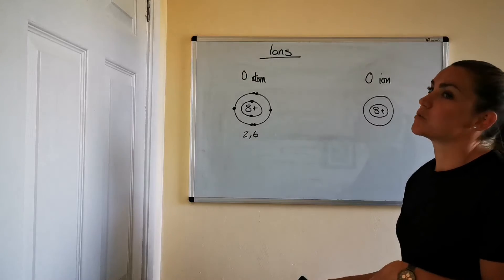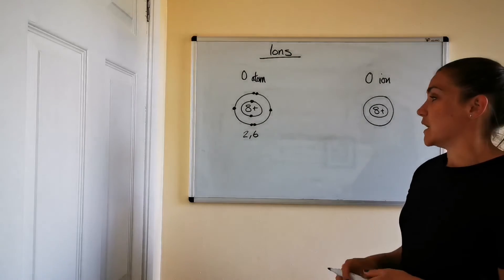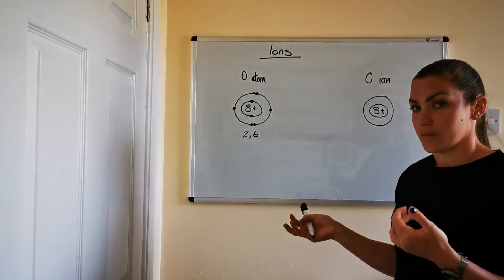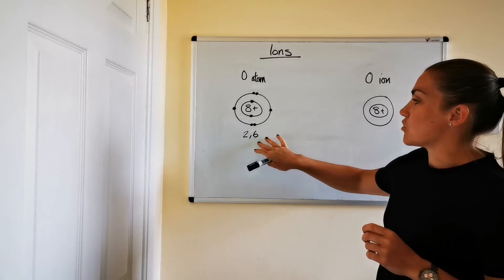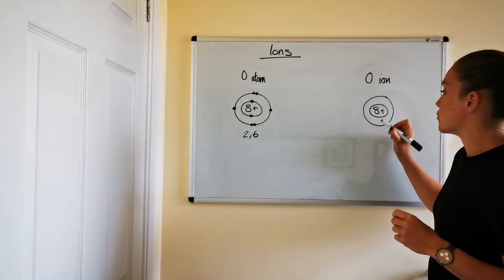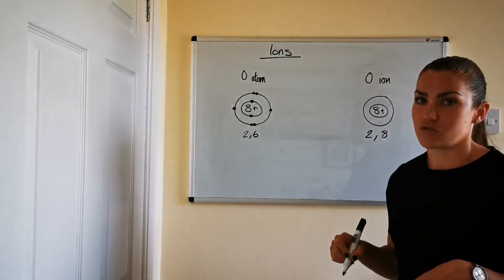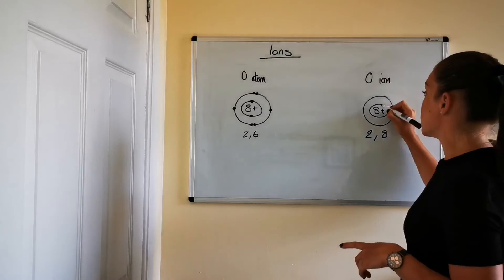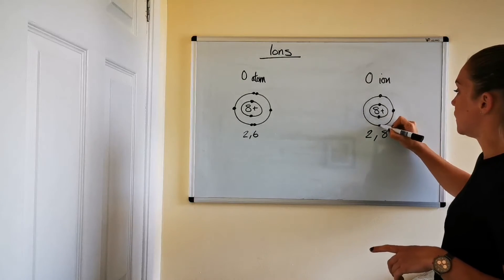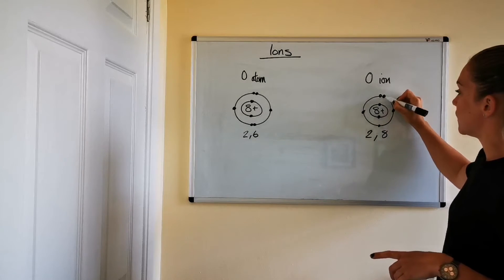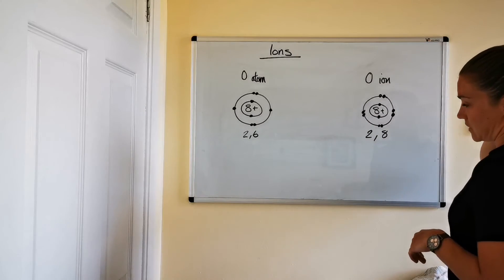So it's always the option that involves the least number of electrons being exchanged between atoms because electrons have to go and come from somewhere they can't just disappear into nowhere. So that's exactly what happens. Oxygen will gain two electrons so its new electron arrangement becomes 2,8 and that's the same electron arrangement as neon. So if we draw that in here there's two, then eight. Okay and now that's stable.